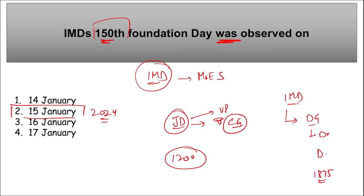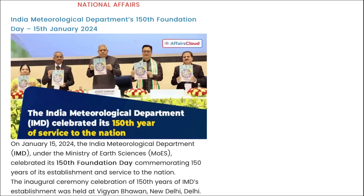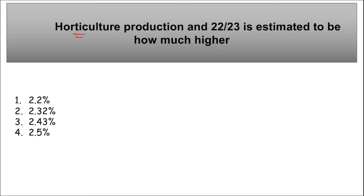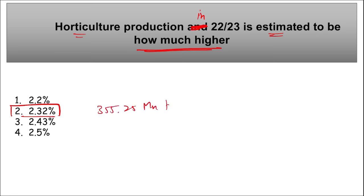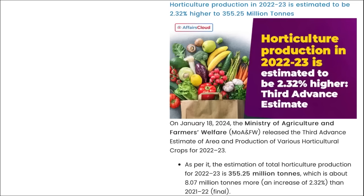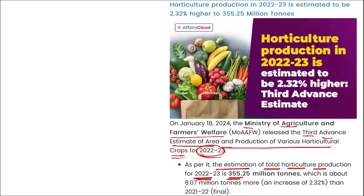Next: horticulture production in 2022–23 is estimated to be how much higher? Horticulture production in India is estimated to be 2.32% higher at 355.25 million tons. The Ministry of Agriculture and Farmers Welfare released the third advanced estimate of area and production of various horticulture crops for 2022–23. The total is 355.25 million tons, an increase of about 8.07 million tons, or 2.32% over the previous year.